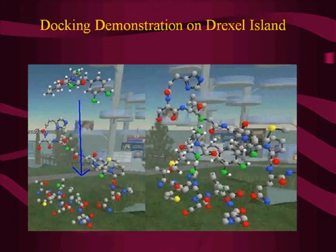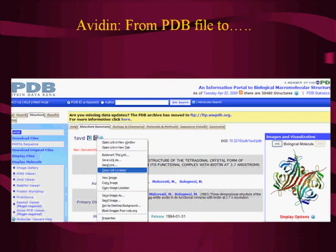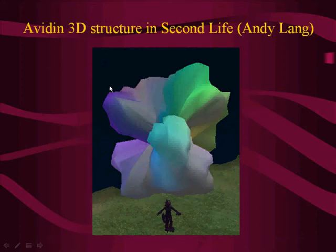You can also display the entire enzyme. This is the same enzyme — the whole thing instead of just the receptor site — work Peter Miller has done. Recently with Andy Lang, we can actually go from a PDB file and render a fully detailed protein using only one prim in Second Life. Since Drexel Island is about 90% saturated in prims, this single-prim approach for structures like the 3D structure of Avidin enables much larger projects.